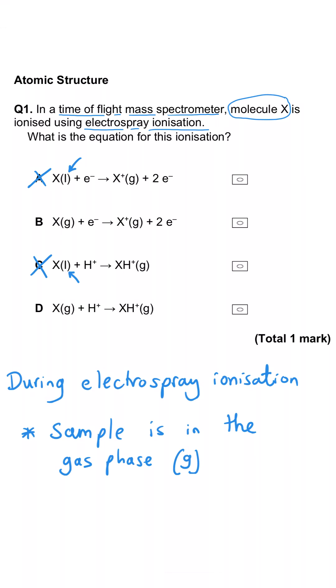The second important fact about electrospray ionization is that protons are gained during the process. You can see that in B it is an electron that is being gained, so that's wrong. And in D, a proton is being gained and we can see that because of the H+ ion here. So D is the correct answer.